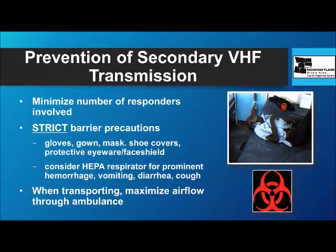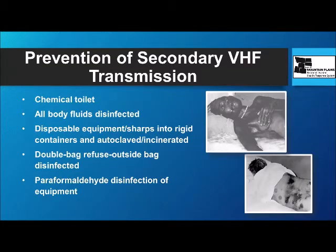Secondary transmission is a problem. Minimize the number of people involved in the care of these patients. You need strict barrier precautions: gloves, gowns, masks, shoe covers, face covers, eyewear, etc. For any patient who has prominent bleeding, vomiting, diarrhea, or cough, consider HEPA filters and maximize airflow in ambulances when transporting. A chemical toilet is necessary to deal with waste materials. All body fluids need to be disinfected. All equipment needs to be kept in a container and autoclaved or incinerated. Double-bag garbage and disinfect. You can use paraformaldehyde for equipment.